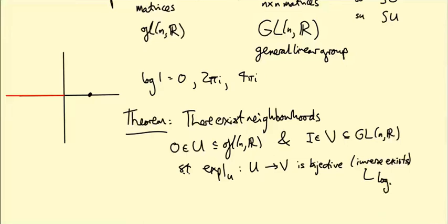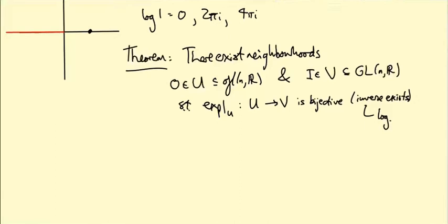We call this inverse log. And this log map is very nice. Just like the exponential map, it's infinitely differentiable. It's actually got a Taylor series we can write down that converges. So it's an analytic function, which we'll talk about later. How are we going to prove this theorem? We're going to appeal to a result from multivariable calculus that I'm not going to prove. This is called the inverse function theorem.